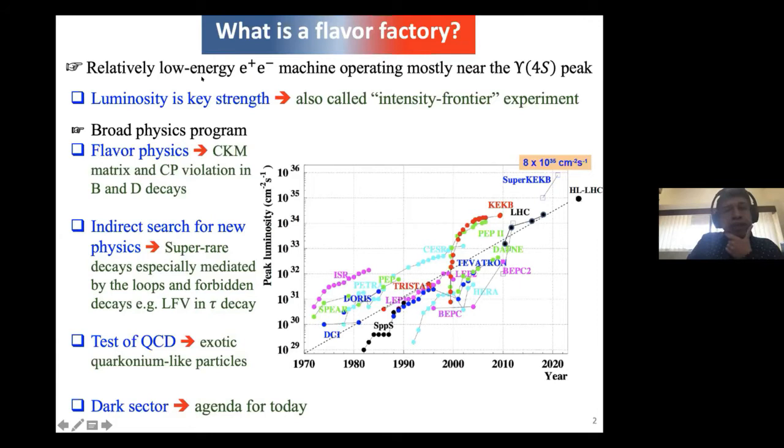So what do we mean by flavor factory? These are relatively low energy E plus E minus machines operating mostly at the Upsilon 4S, the bottom-antibottom resonance at that peak. These are lepton machines, so the cross-section is not something we can brag about, but luminosity is the key strength. We're talking of very high luminosity, so-called intensity frontier experiments. In the plot over here, you see the evolution of peak luminosity at different machines starting from the 1970s. The Belle 2 experiment at Super KEKB in Japan will take this luminosity to a stupendous value of 8 times 10 to the 35.